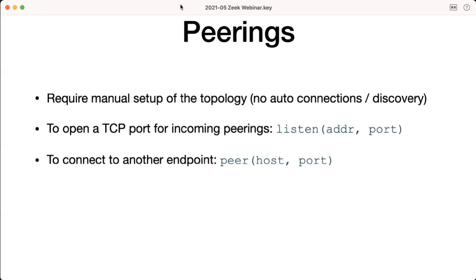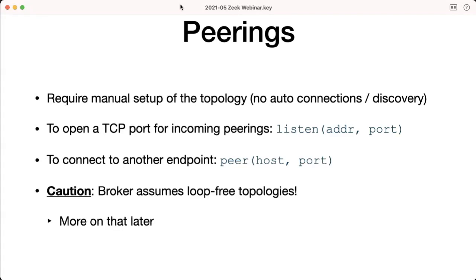On the opposite side, you can connect to another endpoint with the `peer` function, providing a network address or hostname and TCP port. One word of caution: Broker assumes a loop-free topology. With the current Broker version, you want to build trees without loops — more on that later.